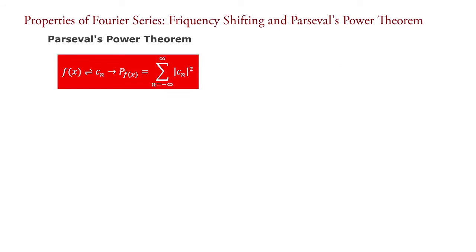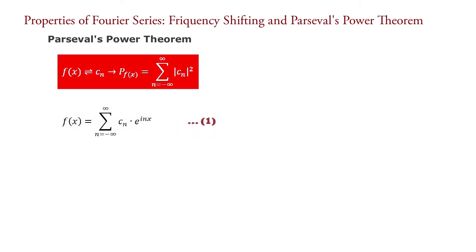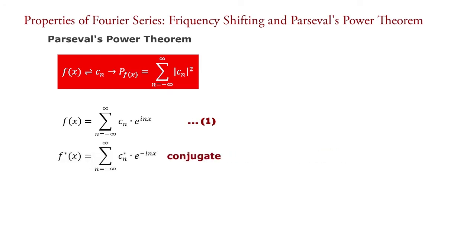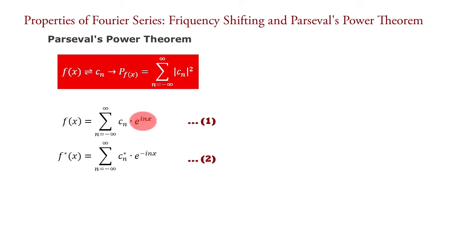For explanation, consider a complex form of Fourier signal with period 2π: f(x) equals the series — say equation 1. Taking its conjugate, we have f(x)* equals — say equation 2. Here, conjugate of f(x) is f(x)*, conjugate of C_n is C_n*, and conjugate of e raised to i·n·x is e raised to minus i·n·x.